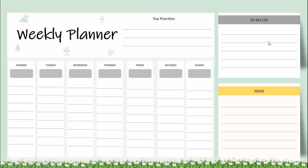On the right side I have created a to-do list with a shadow effect. I've also added one more area where you can add ideas. At the bottom, just to look good, I've added some small flower and plant images.